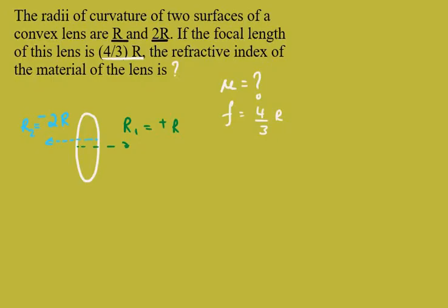And we know that with all these values we can directly use the lens maker's formula. That is 1 by F is equal to n to 1 or mu to 1 minus 1 into 1 by R1 minus 1 by R2.